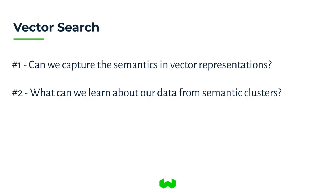In vector search, we're looking at a new way of search where we represent objects with vector representations extracted from deep learning models. The key questions are: how well can we capture semantics in vector representations, and what can we learn about our data from the semantic clusters formed by these vector representations?